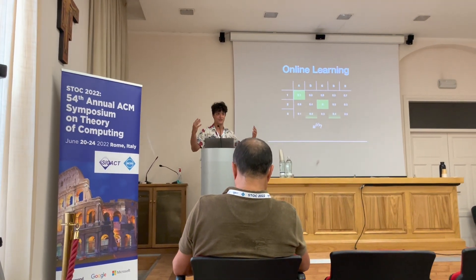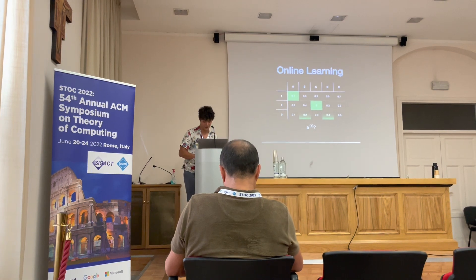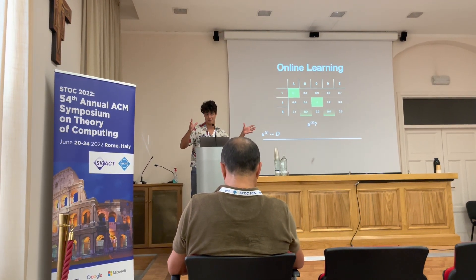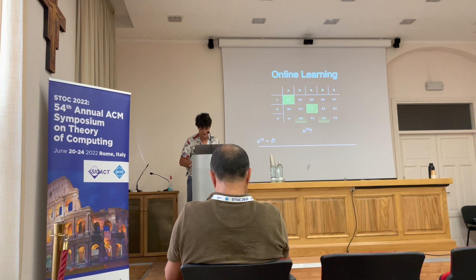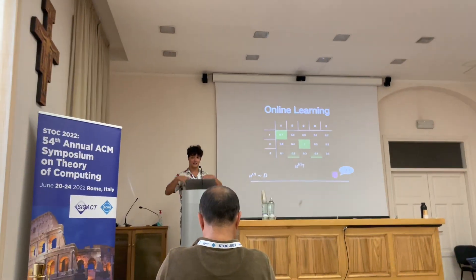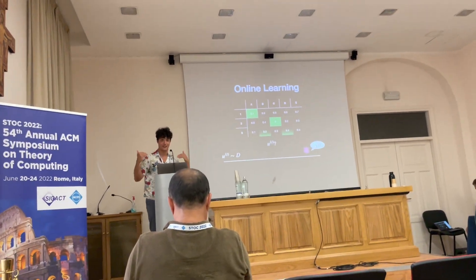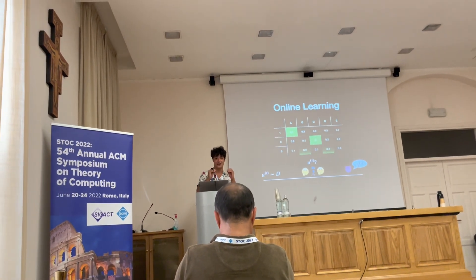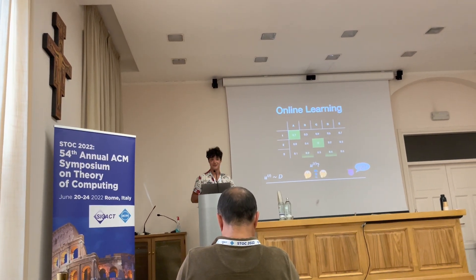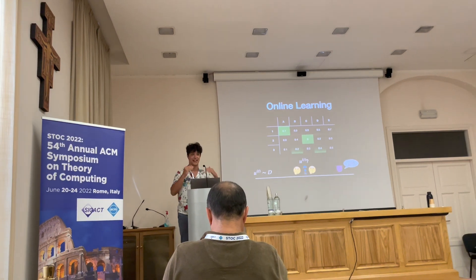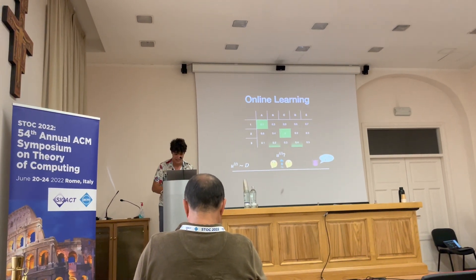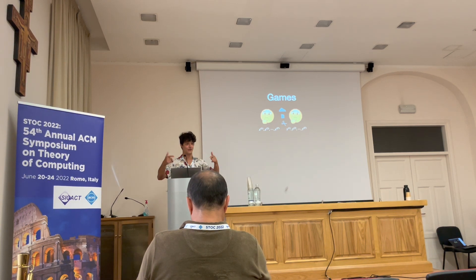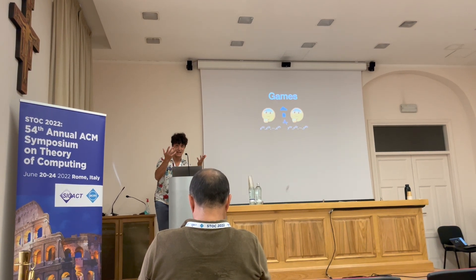There's a spectrum of online learning settings. On one side, utilities come from some fixed distribution — that's the easy side. On the other side, utilities are chosen adversarially to mess with our learning as much as possible. We're interested in the game setting that exists in between: two players repeatedly playing a game against each other, trying to learn how to play.